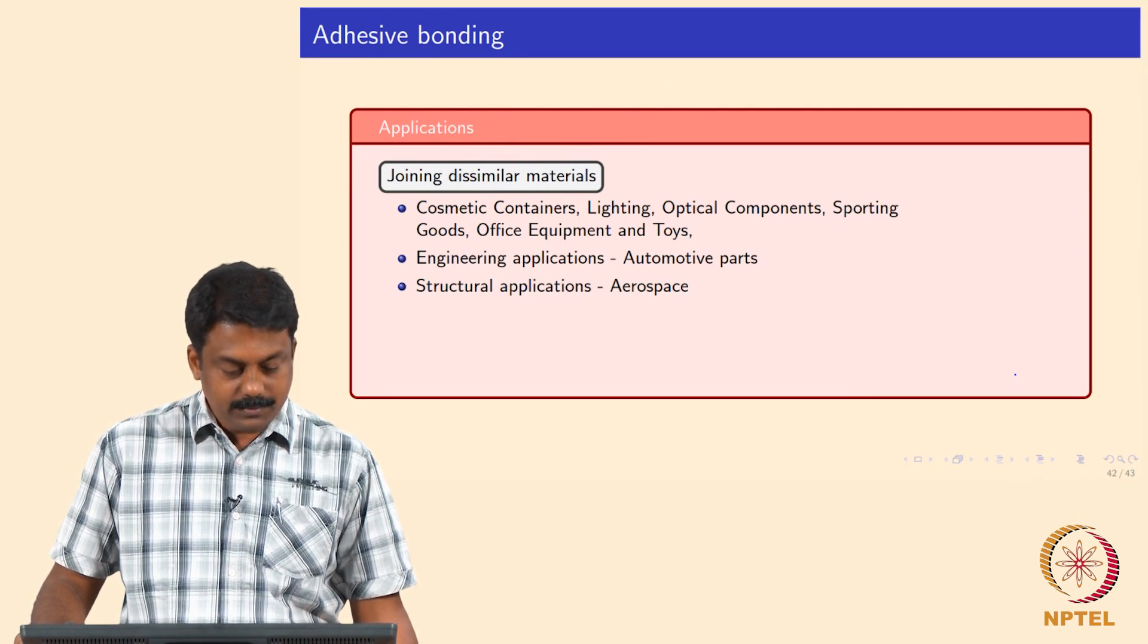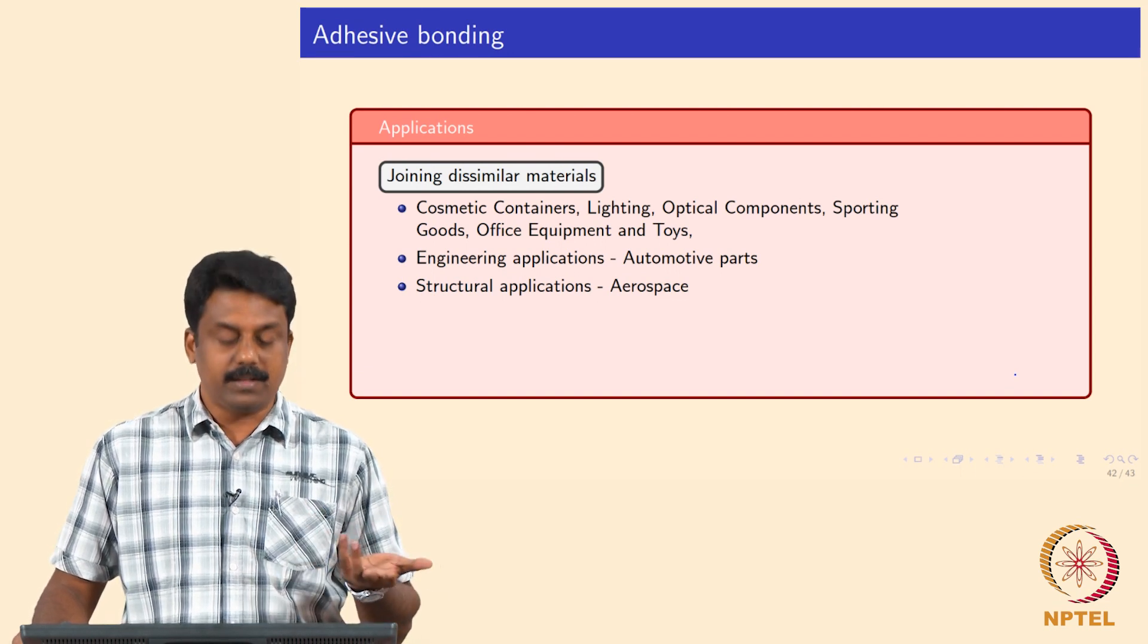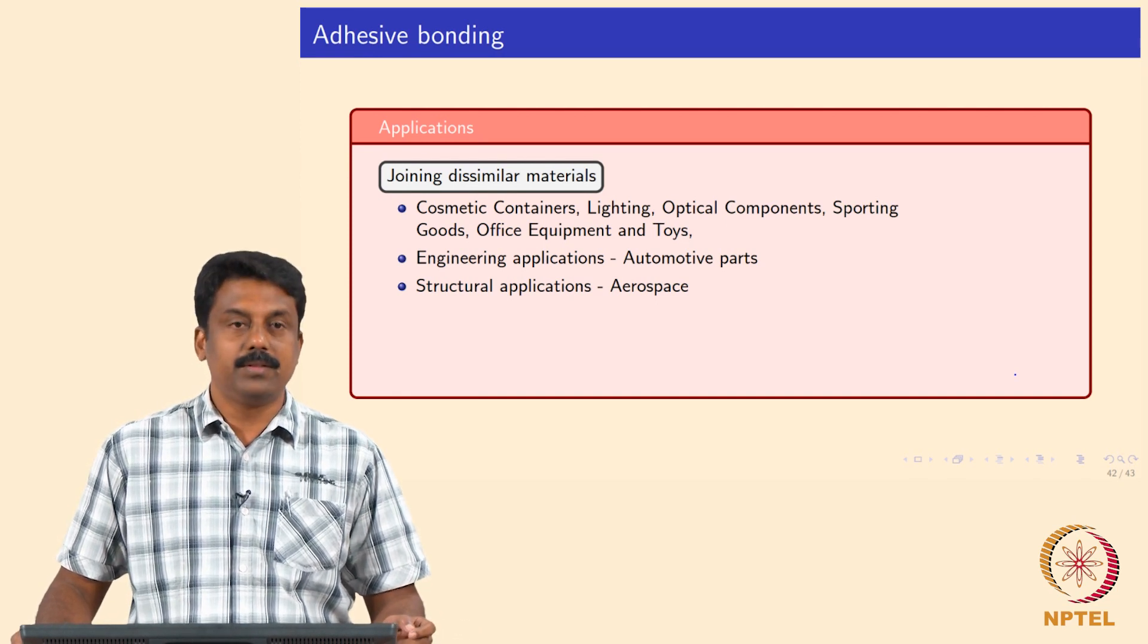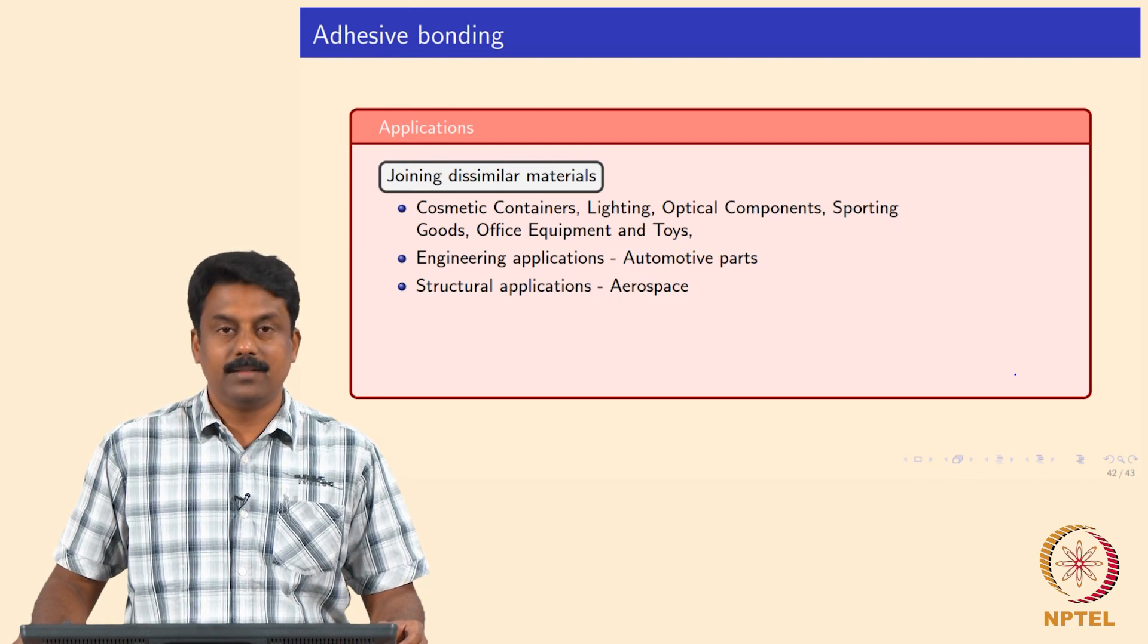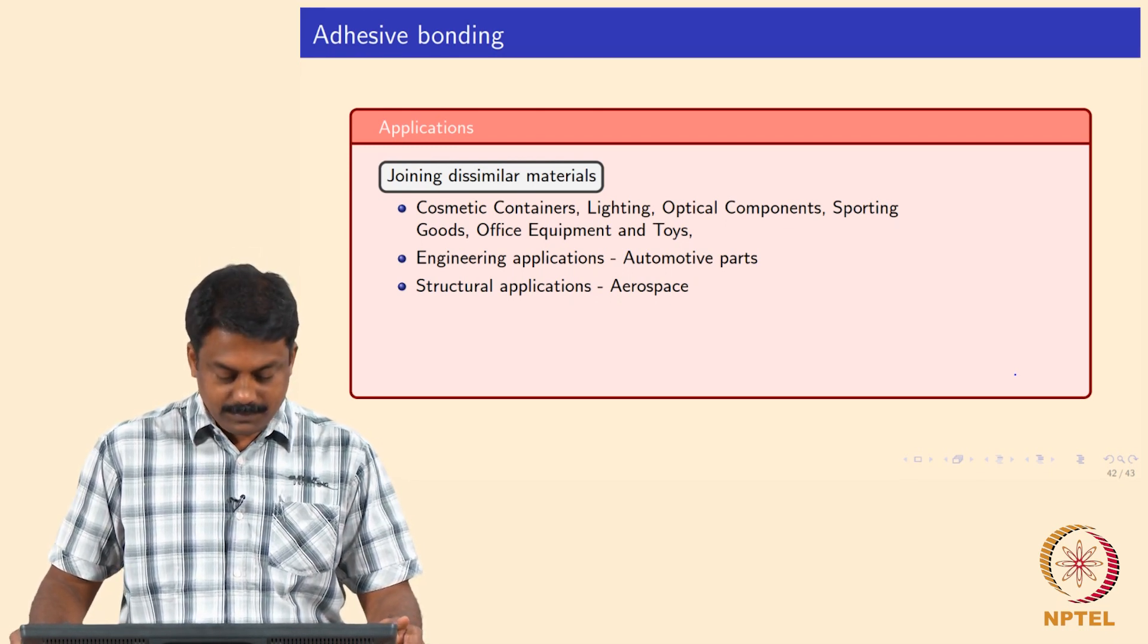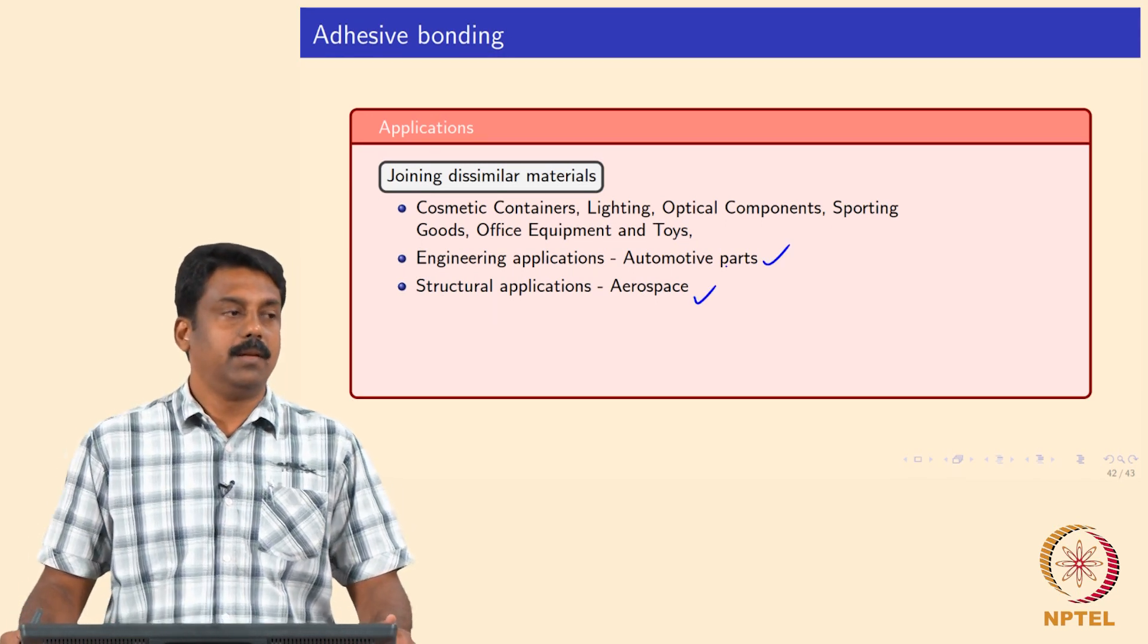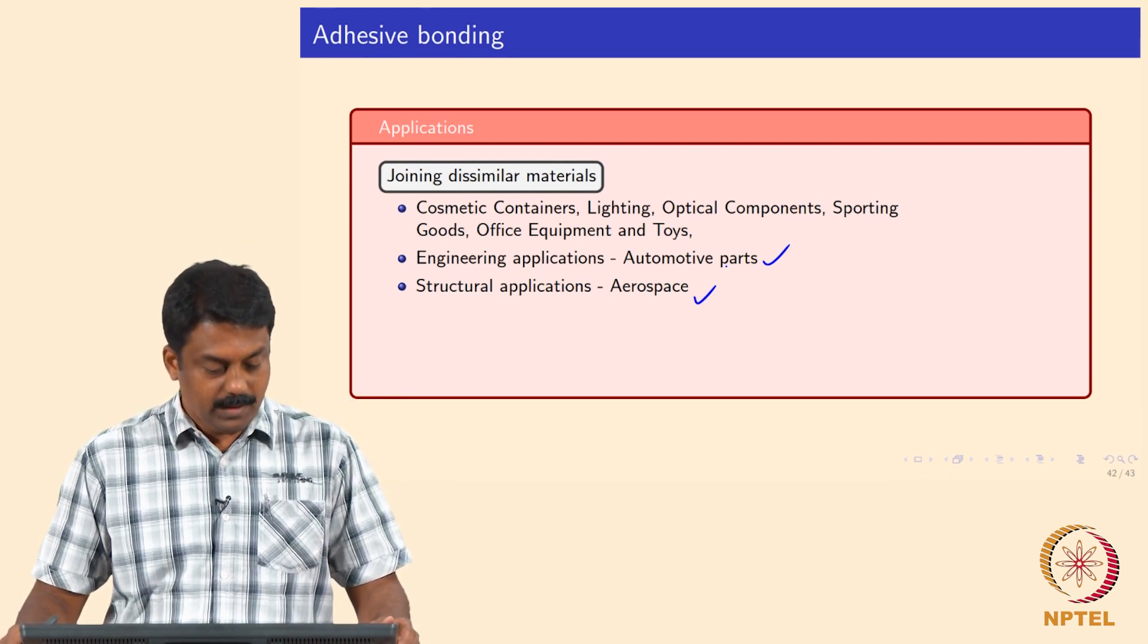What are the applications of adhesive bonding for polymer specifics? Cosmetic containers, lighting and optic components, sporting goods, shoes - shoe is a classic example of adhesive bonds - office equipment, toys, automotive parts, and aerospace applications are also very widely used to join dissimilar alloys.